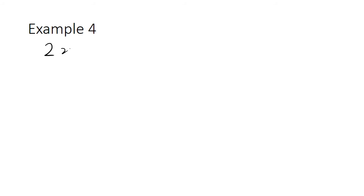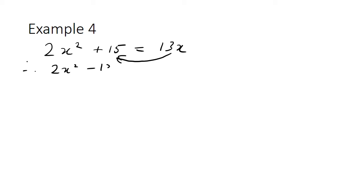One last example. This time we'll start off with the quadratic equation 2x squared plus 15 equals 13x. Again, the first step we need to bring the 13x term over to the left-hand side. So we end up with 2x squared take 13x plus 15 equals 0. Looking at this — no highest common factor — so we need to use the splitting the x term method.